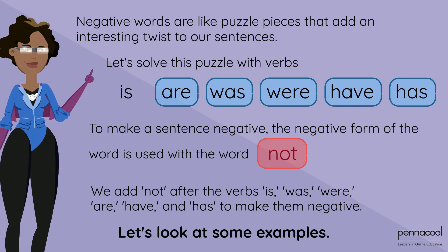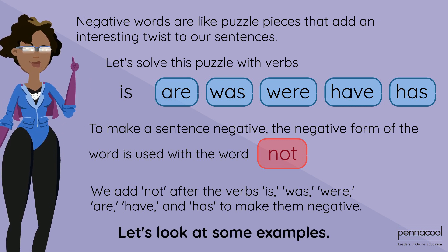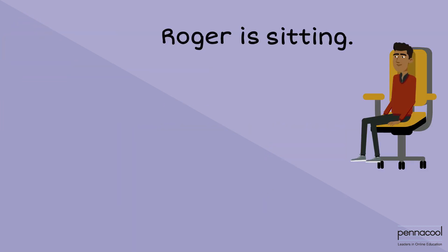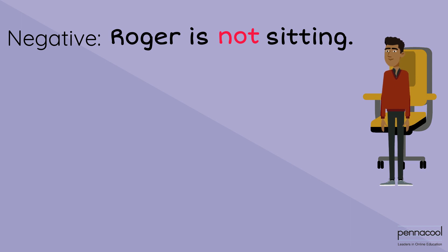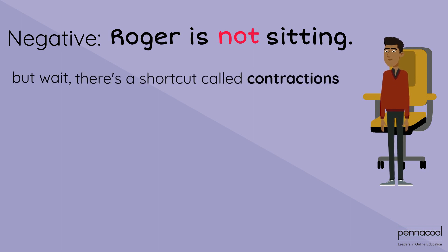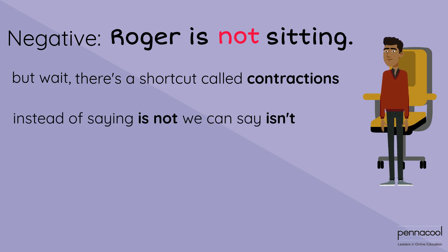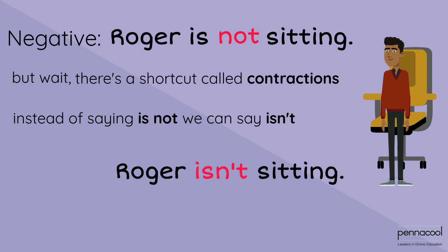Let's look at some examples. Roger is sitting. Now let's make it negative: Roger is not sitting. But wait, there's a shortcut called contractions. Instead of saying 'is not', we can say 'isn't'. So, Roger isn't sitting. We just use a contraction.